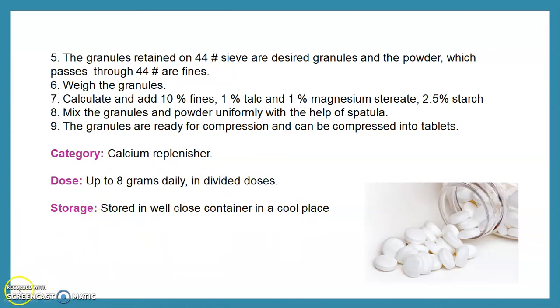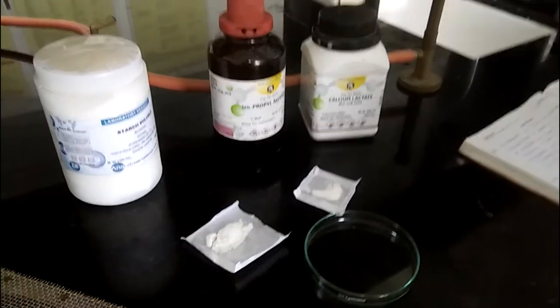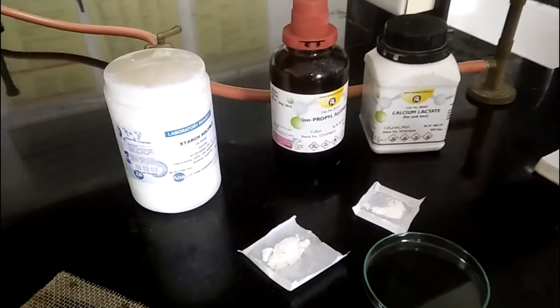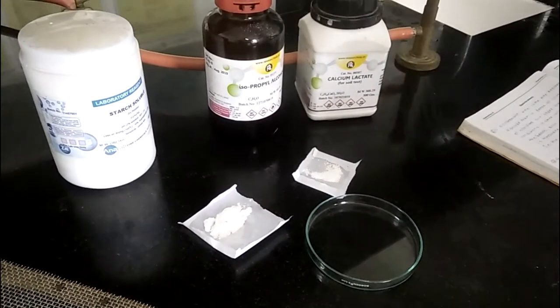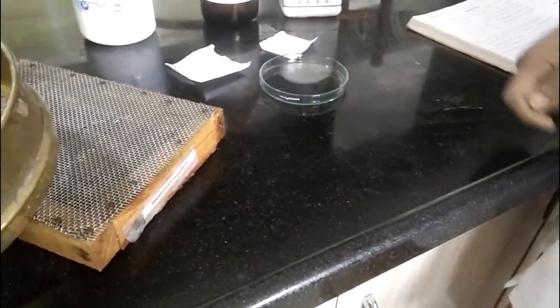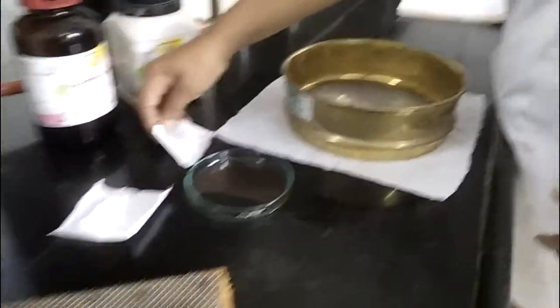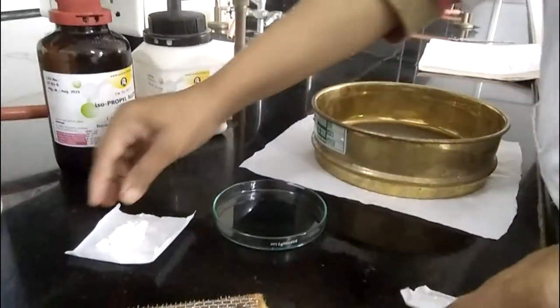Welcome to the pharmaceutics first laboratory practical. Today we deal with experiment number 37 — to prepare, evaluate, and submit granules ready for compression of one calcium lactate tablet. We require calcium lactate in already-measured quantity, isopropyl alcohol to form a coherent mass, and 5% starch. We use a granulating sieve and sieve number 60 to sieve the calcium lactate. Begin the procedure: take the weighed quantity of calcium lactate and starch powder and pass both powders through sieve number 60.